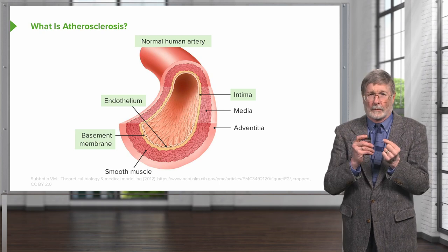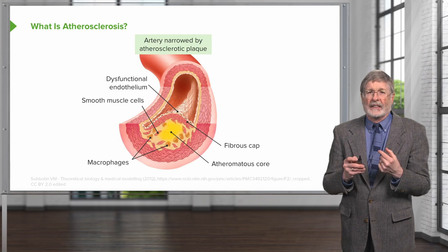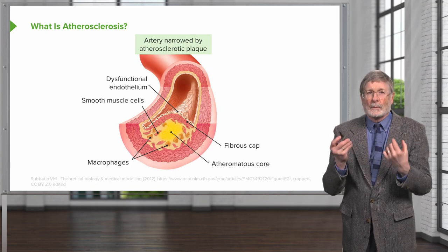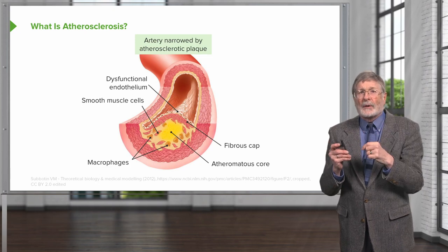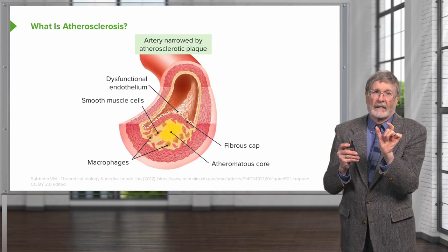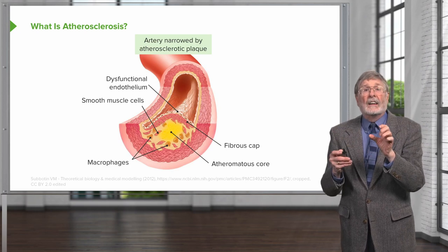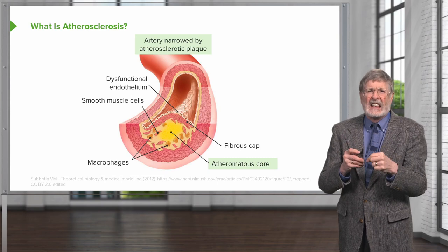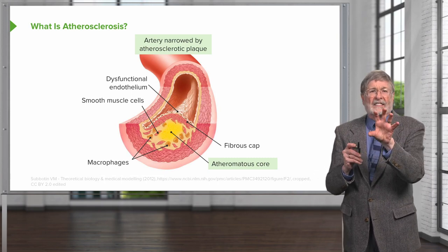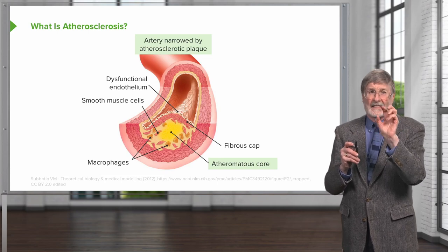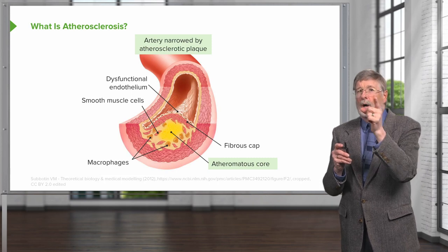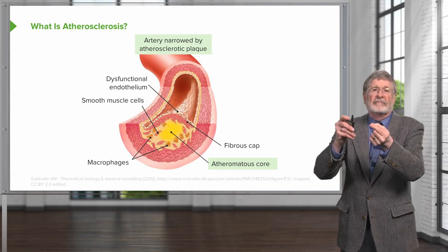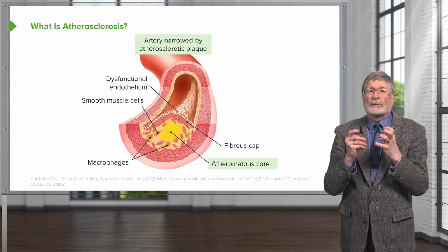Now let's do atherosclerosis. In atherosclerosis, we have an artery that has been narrowed by an atherosclerotic plaque. The name is actually quite good — it comes from the Greek. 'Athero' means gruel-like, as in porridge or oatmeal. The central atheromatous core in an atherosclerotic plaque is fat and necrotic debris, old red cells, a whole variety of things — kind of a mush that looks a little like gruel. The 'sclerosis' part means scarring. So atherosclerosis is scarring overlying gruel — that is the typical atherosclerotic plaque.